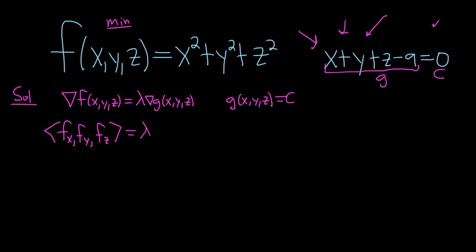That's equal to lambda and then here we have the partial with respect to g: g_x, g_y, and then g_z. And then our constraint is just our constraint, it's up here. All right let's go ahead and work this all out.